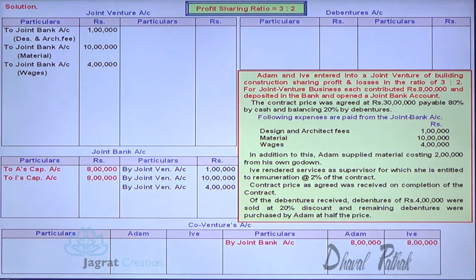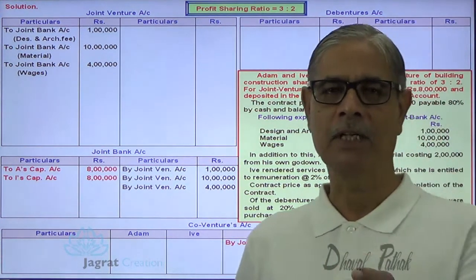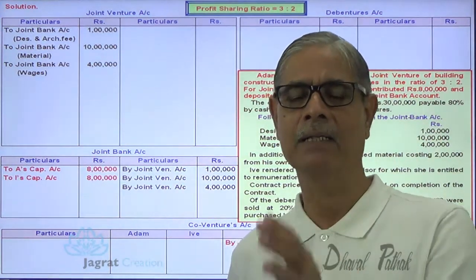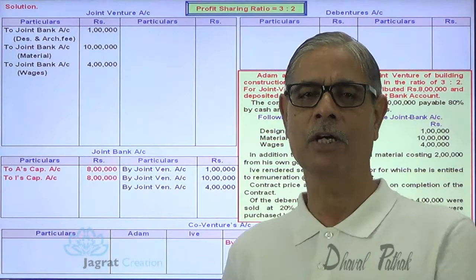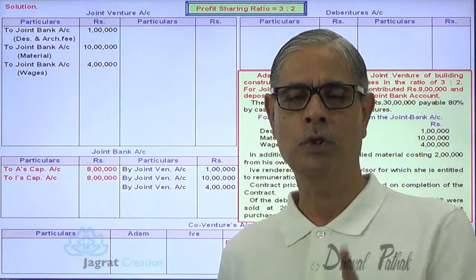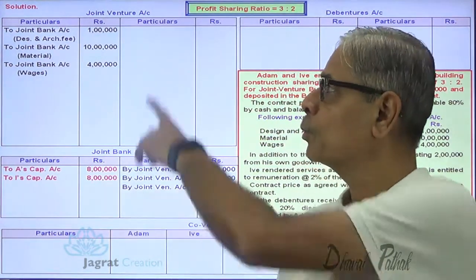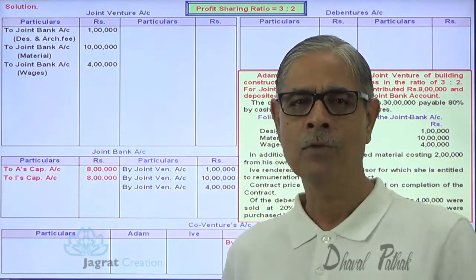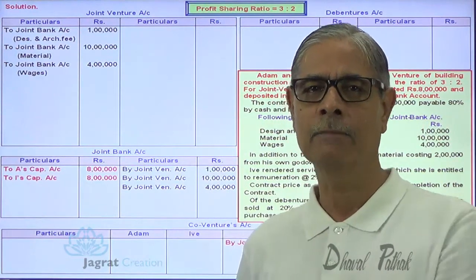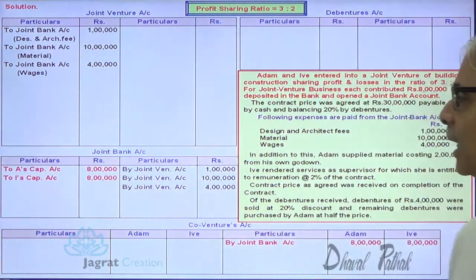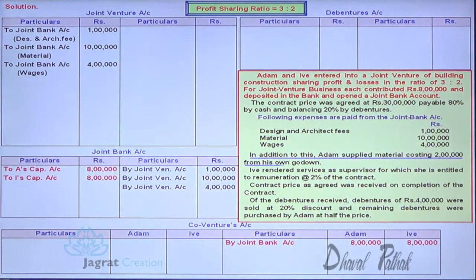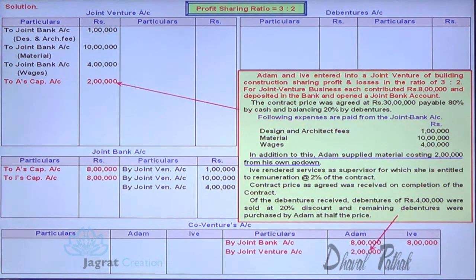In addition, Adam supplied materials — materials are supplied by Adam for the purpose of construction. So it is an expense of joint venture business, so joint venture account will be debited. Adam is the giver, so Adam's capital account will be credited for that. Joint venture account debit to Adam's capital account credit, 2 lakhs.